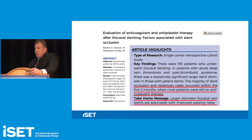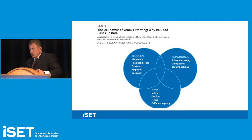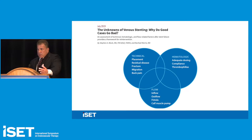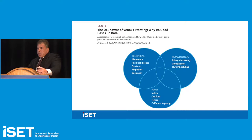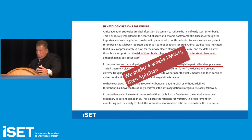I like this write-up by Stephen Black in Endovascular Today. For stent patency, three things matter: the technical piece of the procedure, the hematologic management — platelet only, DOAC, or enoxaparin — and most importantly, the inflow. If you have poor inflow, you're going to need lifelong anticoagulation to maintain stent patency. Risk of thrombosis is highest in the first weeks; in the UK they like two weeks of low molecular weight heparin and then warfarin before bridging.